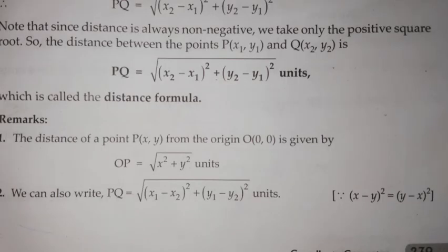The distance formula says if P and Q are two points having coordinates x1, y1, and x2, y2, respectively, then the distance between them can be found using this formula: square root of (x2 minus x1) whole square plus (y2 minus y1) whole square units.